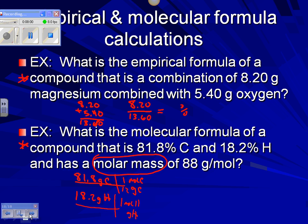One mole of hydrogen is 1 gram, so that gives us 18.2 moles of hydrogen. For carbon: 81.8 divided by 12 gives us 6.82 moles of carbon. Now we do that tricky step — divide by the smallest number of moles. Dividing 18.2 by 6.82 gives roughly 2.7, which we round to 3. So the empirical formula is CH3.